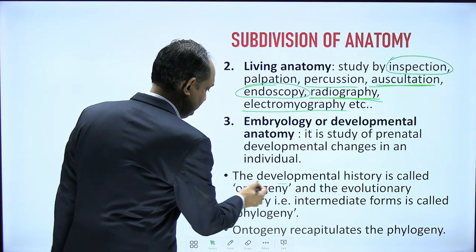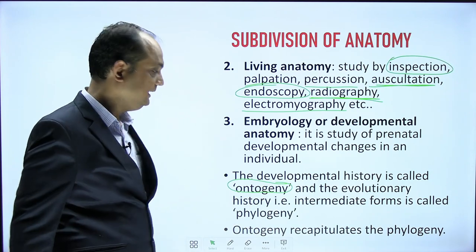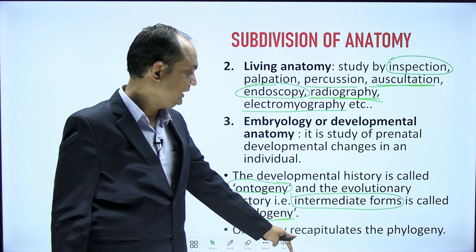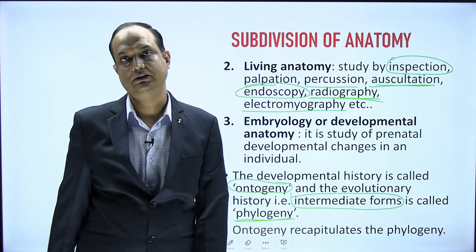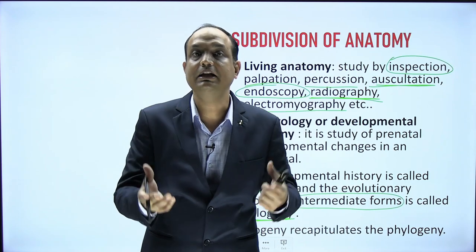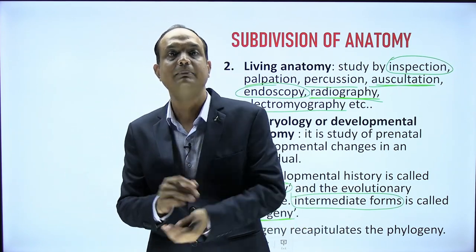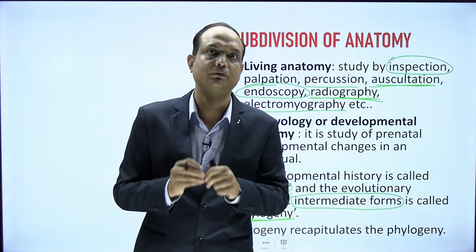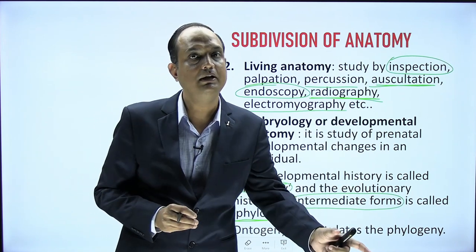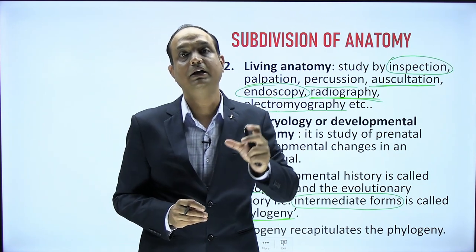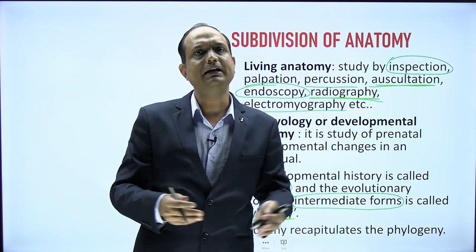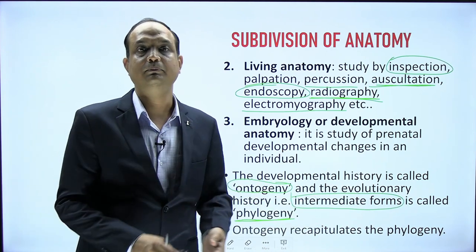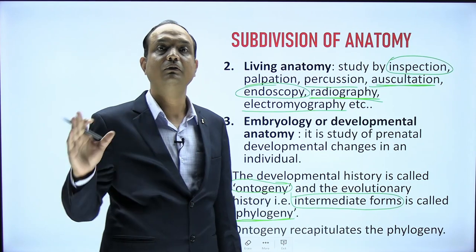Developmental anatomy teaches about evolution. The developmental history is called ontogeny, and the evolutionary part showing intermediate forms is called phylogeny. The concept 'ontogeny recapitulates phylogeny' means the human embryo passes through evolutionary phases. For example, kidneys exist in three varieties: pronephric, mesonephric, and metanephric. Humans have the metanephric kidney, but the human embryo initially develops a pronephric kidney, then mesonephric, and finally the definitive metanephric kidney — reflecting evolutionary stages.